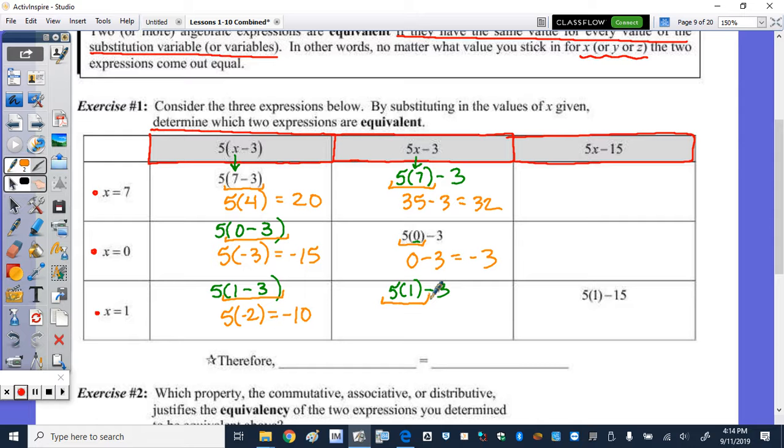Lastly, 5 times 1 is 5. 5 minus 3 is 2. The 32 does not match the 20. So the negative 3 doesn't match the negative 15. And 2 does not match negative 10. So these two expressions are not equivalent.